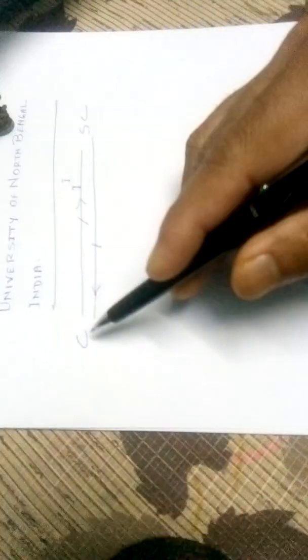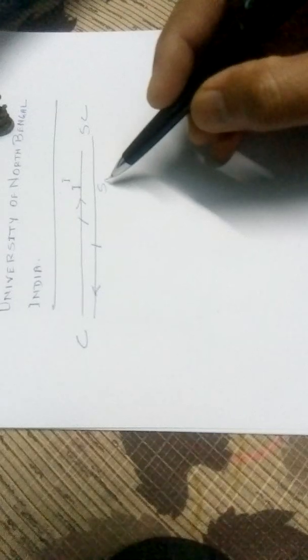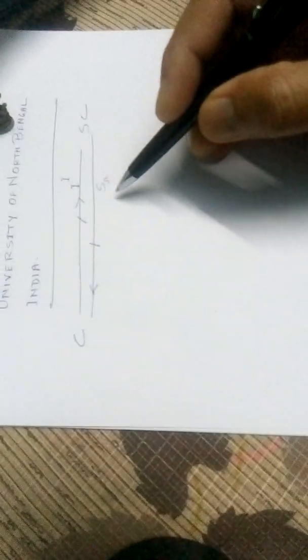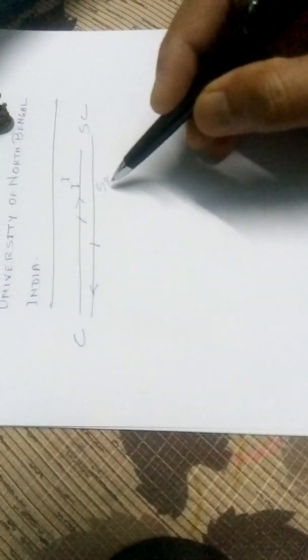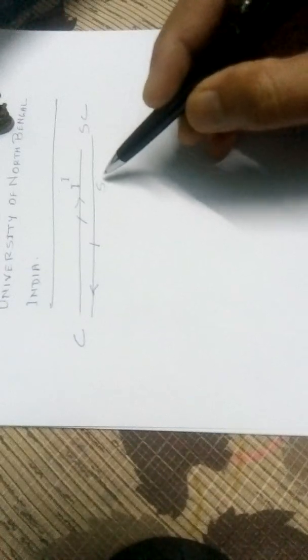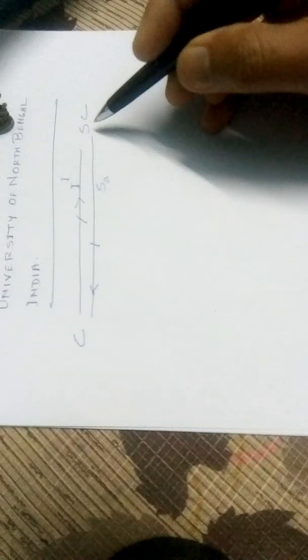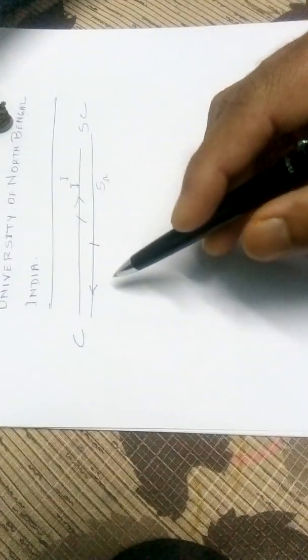To show that sequential compactness may not imply compactness, we considered the example S_omega, the minimal uncountable well-ordered set, every section of which is countable, and every countable subset of S_omega has an upper bound in S_omega. This S_omega in the order topology is sequentially compact but not compact.